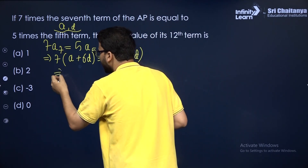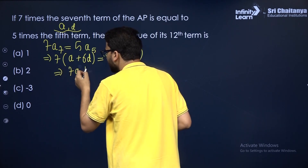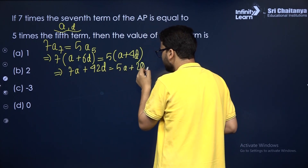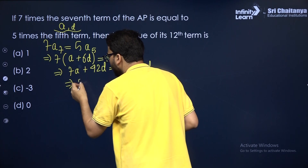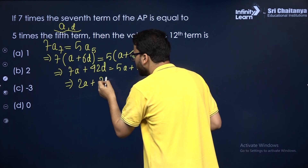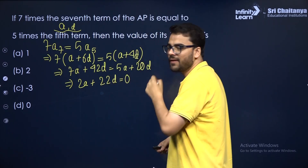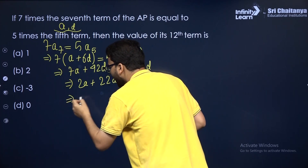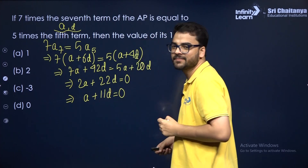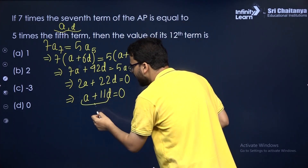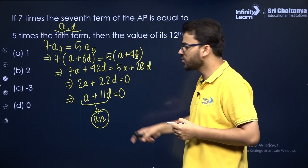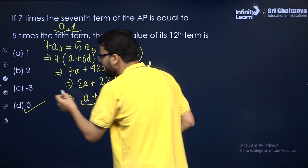Simplifying 7(A + 6D) = 5(A + 4D): we get 7A + 42D = 5A + 20D, which gives 2A + 22D = 0. Dividing by 2: A + 11D = 0. But A + 11D is nothing but the 12th term, since A12 = A + (12−1)D = A + 11D. Therefore the 12th term of this AP is 0.